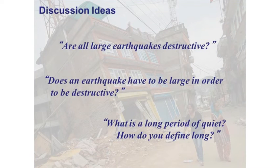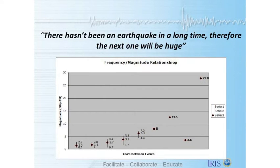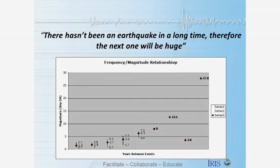Now that students have discussed earthquake frequency and size distribution, I want you to ask them a third question for the whole class: 'If there hasn't been an earthquake in a long time, will the next one be huge?' What that question is really asking about is the relationship between frequency and magnitude. You can interrogate that by plotting the years between earthquakes on the x-axis and the magnitude on the y-axis — this is something you want students to come to on their own. This would be a bonus question to tie the whole activity together.